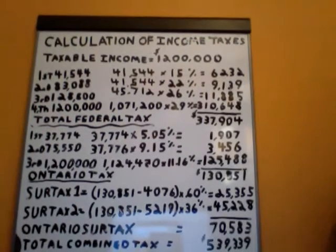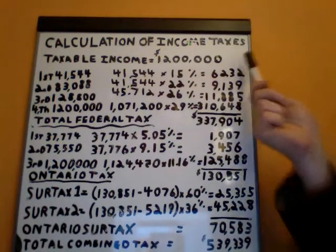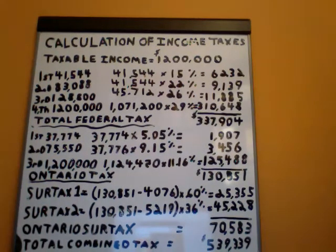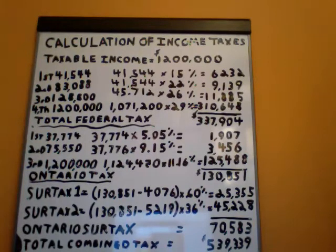As you can see on my big board calculation of income taxes, we have taxable income of $1.2 million for this individual. That would normally be reported on line 260 of the T1 General Canadian Income Tax Return. That amount is essentially total income, which is line 150, less deductions such as RRSPs, moving costs, support payments, etc., to get you down to net income for tax purposes, then additional deductions such as any applicable loss carry forwards to get you down to a taxable income of $1.2 million.